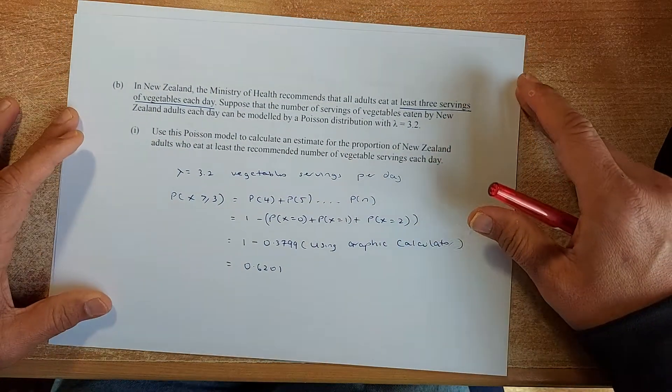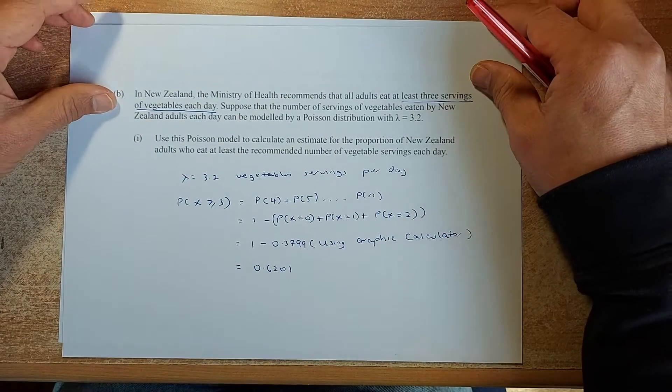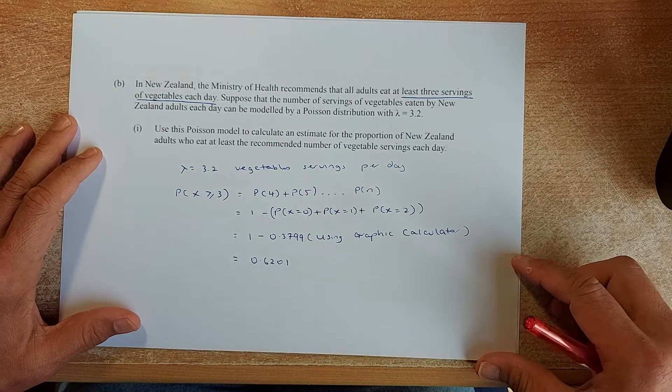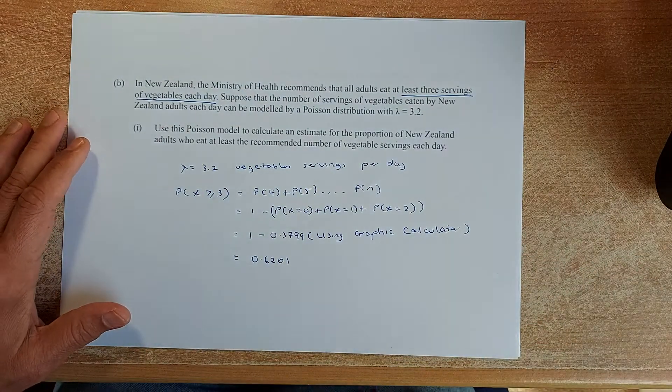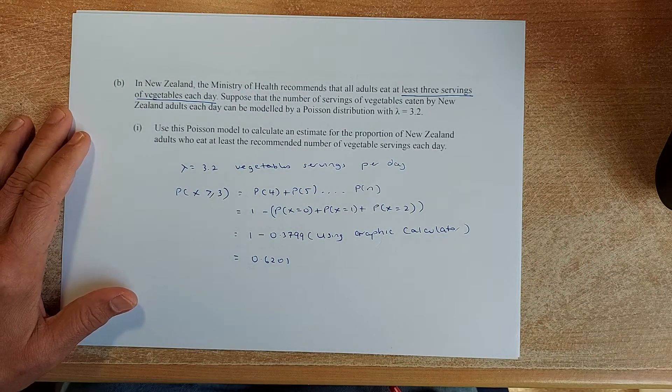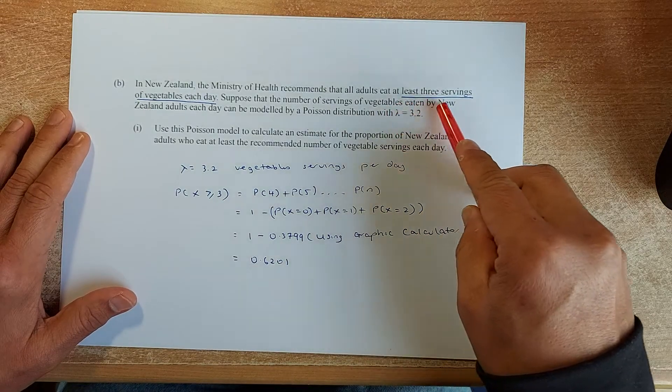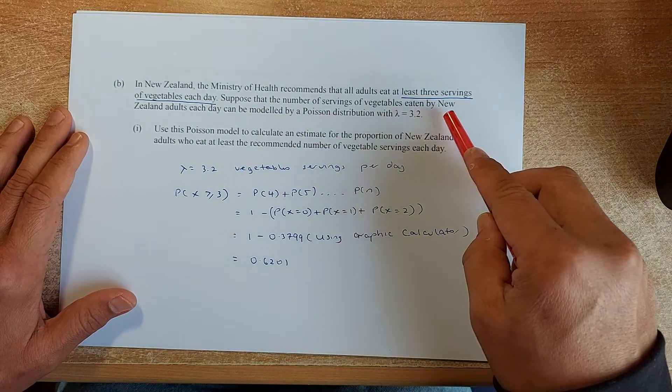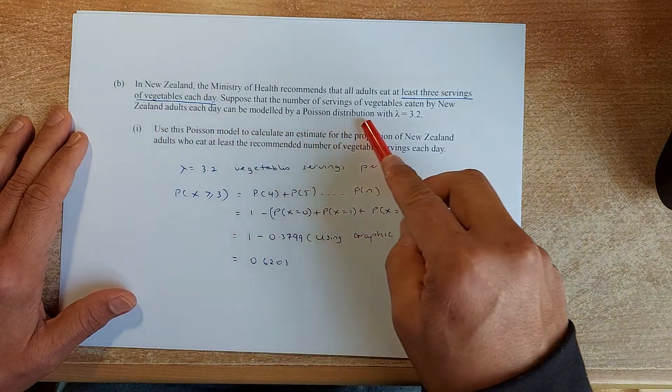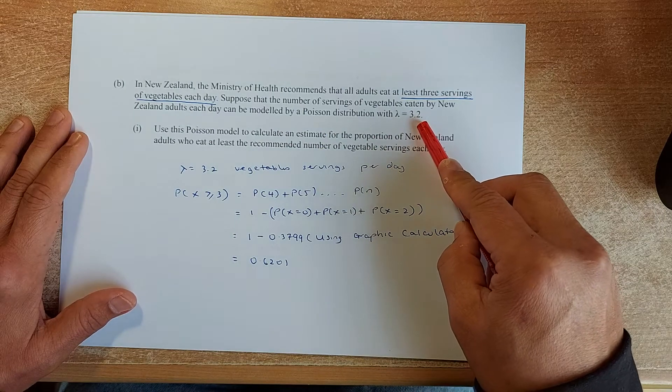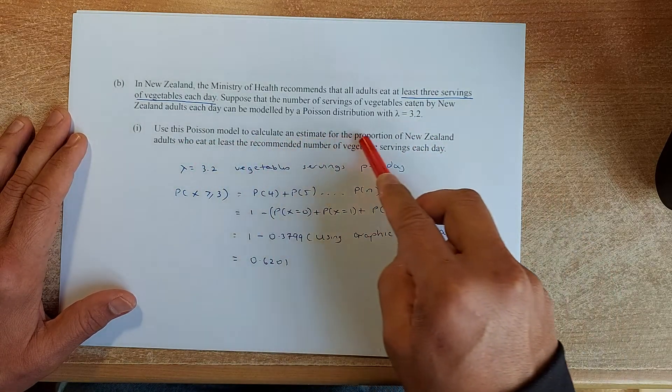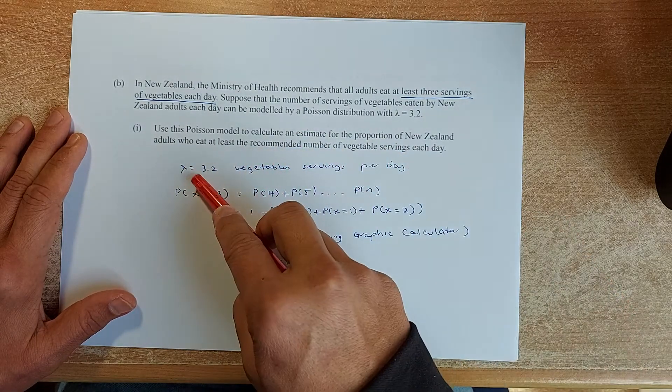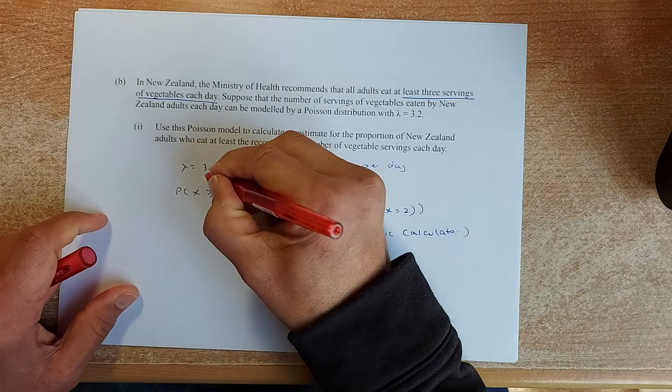The next question is about Poisson distribution. This paper has Poisson, Binomial, Normal and also Triangular and Rectangular distribution. So we shall read the next question. In New Zealand, the MOH recommends that all adults eat at least 3 servings of veggie each day. Suppose that the number of servings eaten in New Zealand each day can be modeled by Poisson distribution with lambda equals to 3.2. Use the Poisson distribution adults who eat at least 3 recommended servings each day.